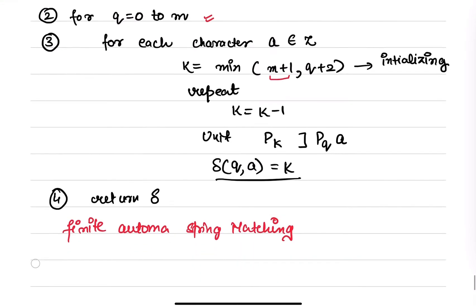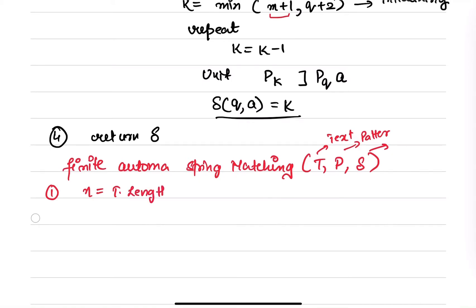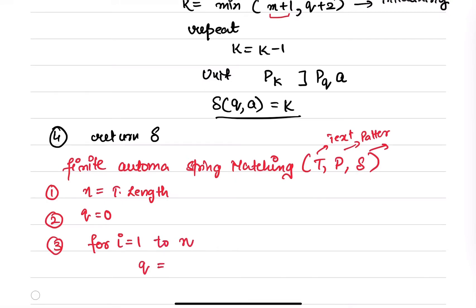We will be using that transition function here. You need t, p, and delta — that is your text, your pattern, and the delta obtained from the above function. First you take n as the text length. Your text will be input to the automata; if it reaches a final state, we say that the pattern exists in the text. You initialize q to 0.